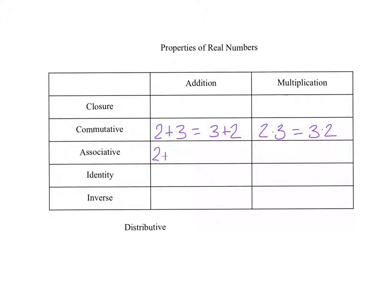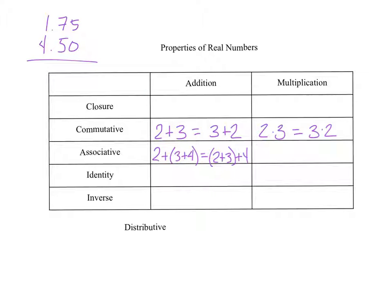Associative means if I was adding three numbers together I would get the same thing. Adding with parentheses here means I have to add those first and then add that. But the associative rule says I can move the parentheses and still get the same thing. You use this a lot in your head — like adding $1.75 and $4.50, you might add the cents together and then the dollars. That's the associative property. We can add things in different groupings and still get the same answer. The same goes for multiplying: 3 times 4 times 2, grouped differently, gives the same result. Associative is where you move the parentheses.